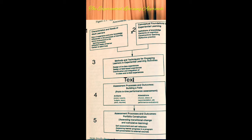Here is a diagram of an experiential learning model for teaching and assessment by Jackson and Isaht (1994). The experiential learning model for teaching and assessment consists of five components.